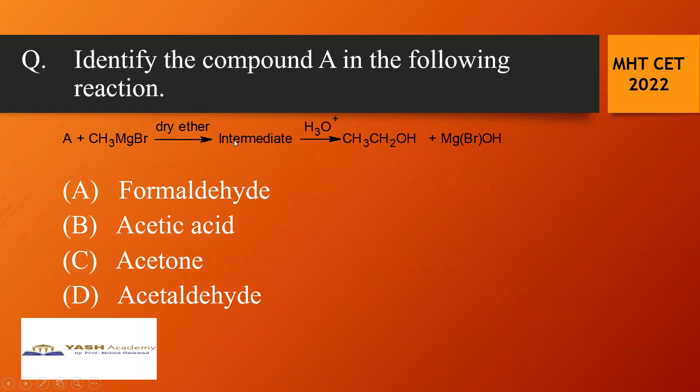It gives an intermediate which on hydrolysis gives a final product that is CH3CH2OH. So this is ethyl alcohol or ethanol. So you have to identify the A whether it is a formaldehyde, acetic acid, acetone or acetaldehyde.